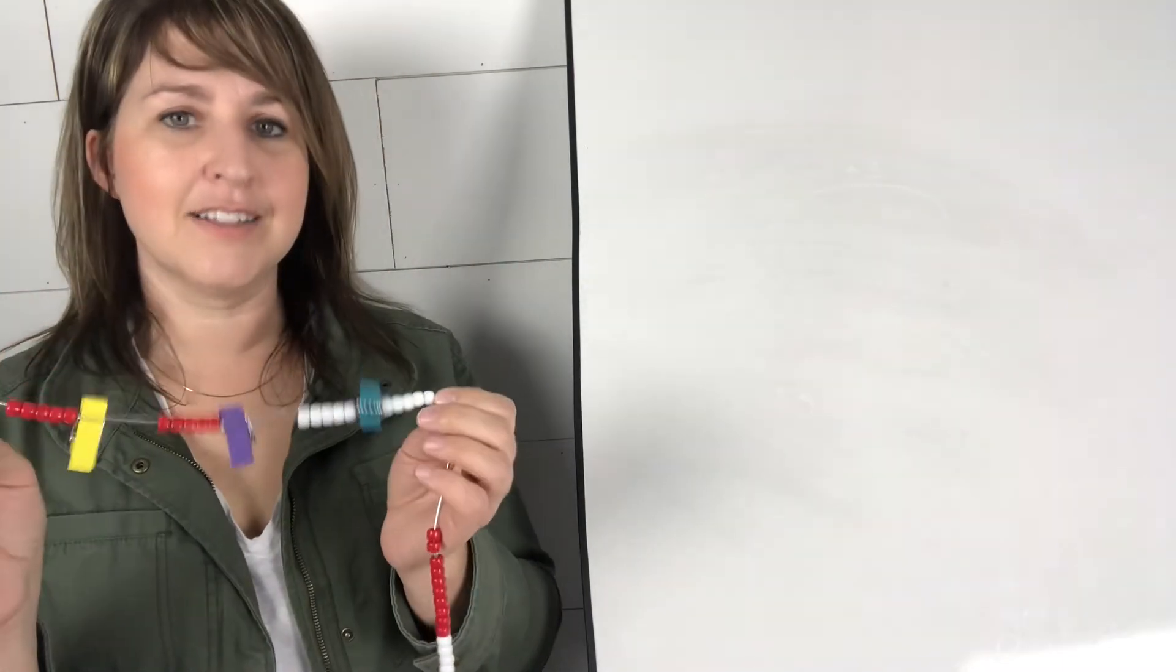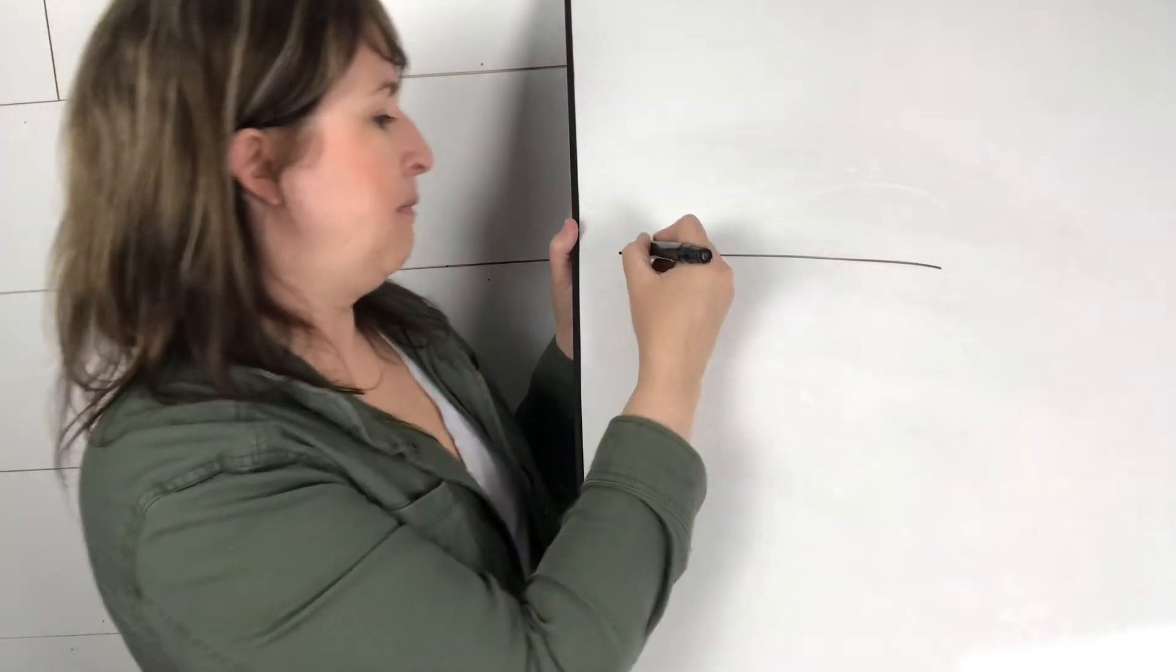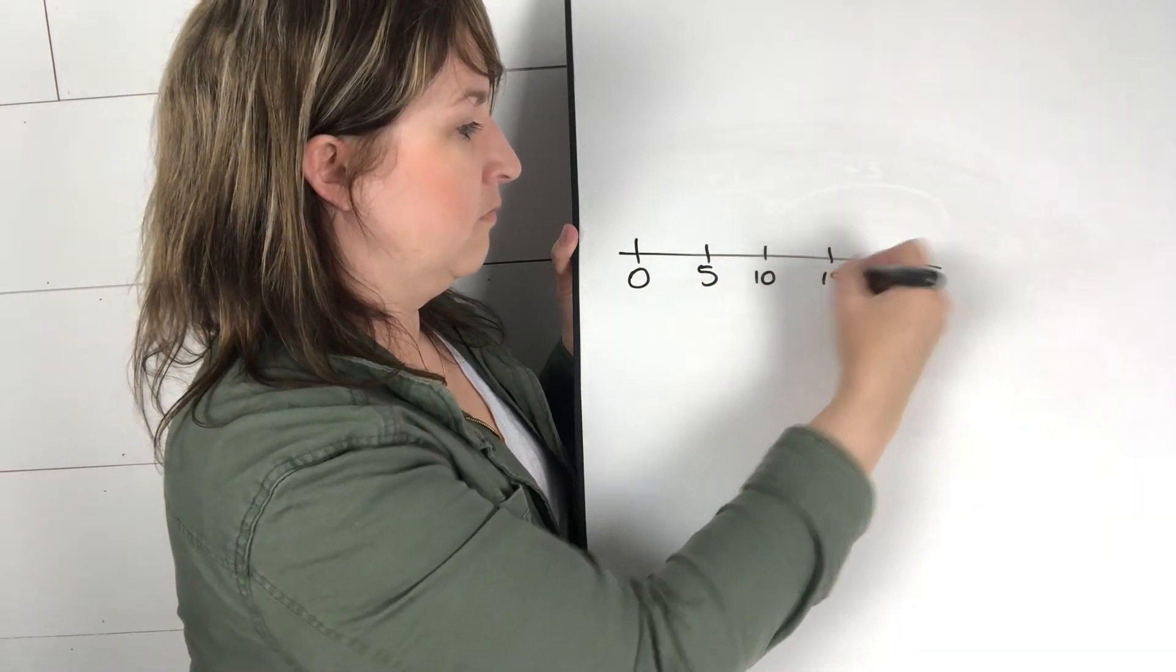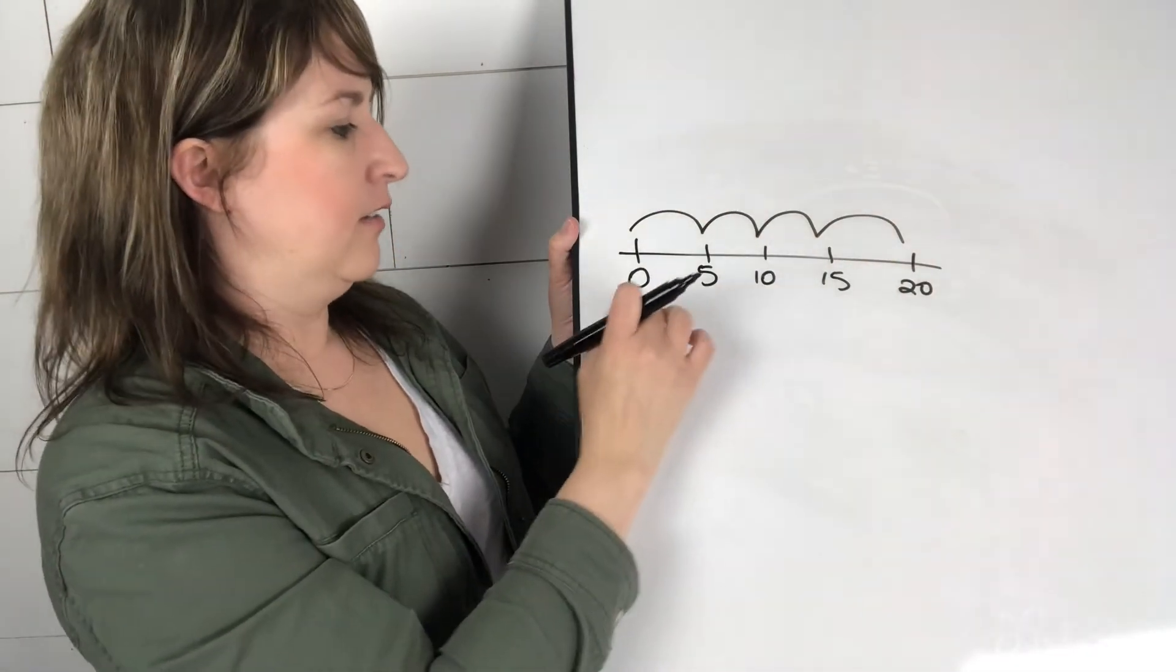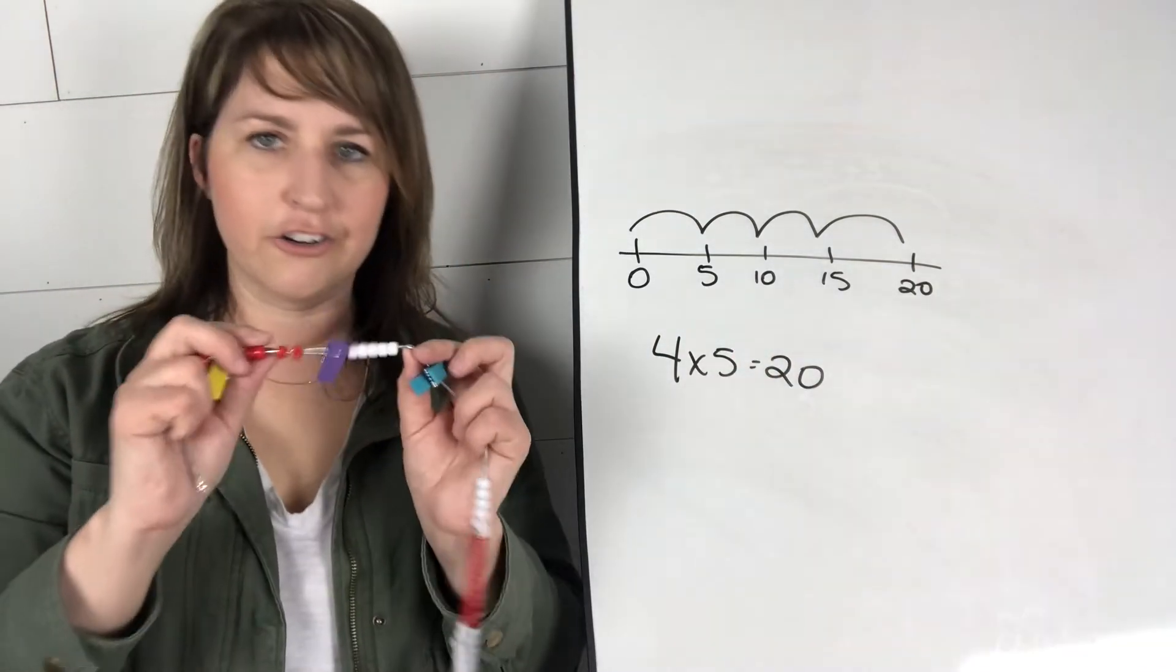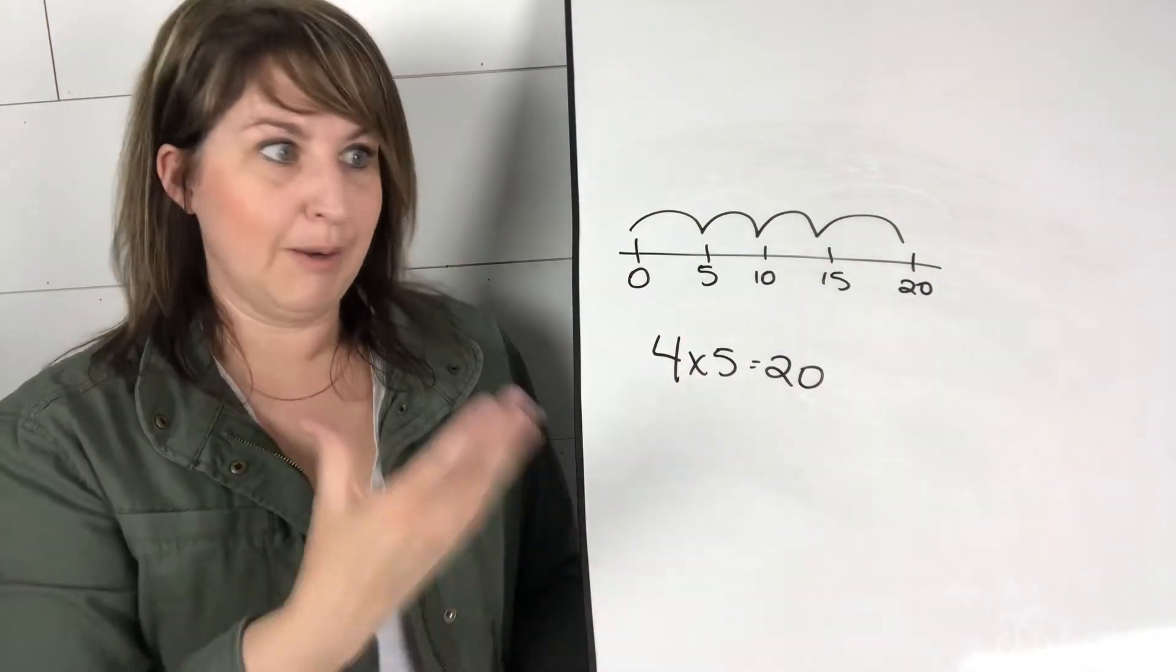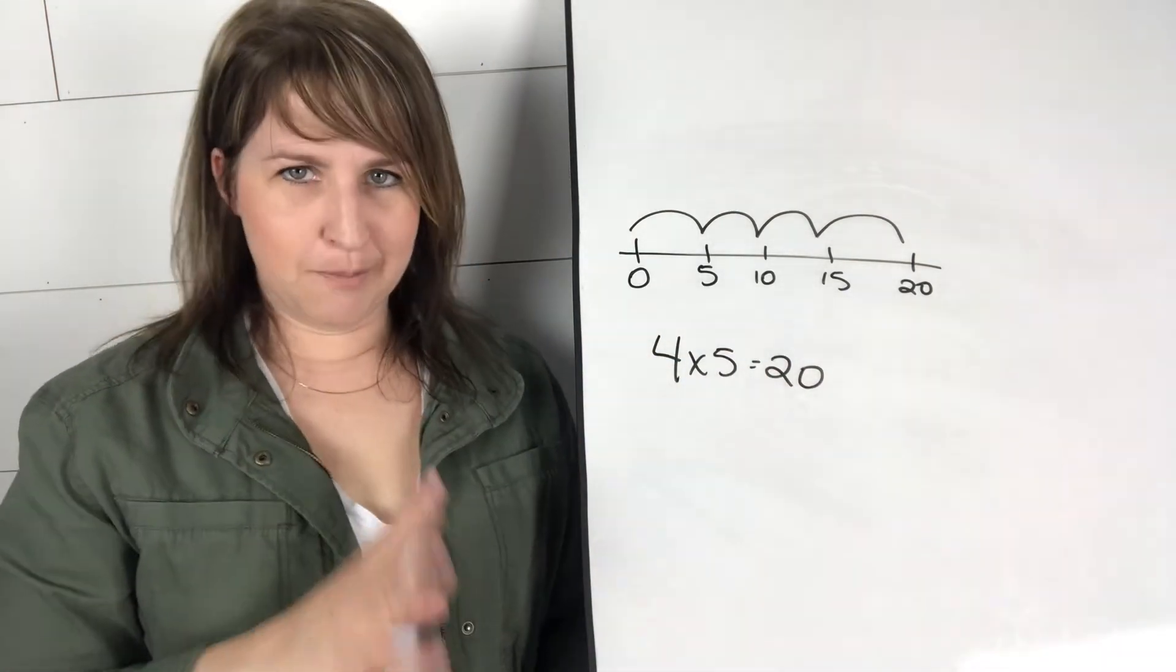Now since we've built this in a concrete way, now we can represent it maybe with some skip counting. Maybe we might do something like this. And now we see that the four jumps, four jumps of five makes twenty. So after we've worked considerably with concrete materials and then with representational drawings or representations, then we move into the abstract. So don't rush this process.